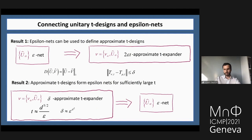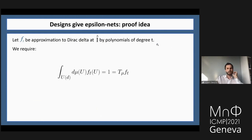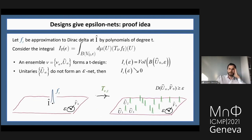Result number 2 has a nicer proof idea. It goes through harmonic analysis on the unitary group. Let F_T be an approximation of the Dirac delta centered at the identity by polynomials of degree T. We only require that F_T integrates to one over the whole unitary group with respect to the Haar measure, meaning the action of T_μ on F_T equals one.